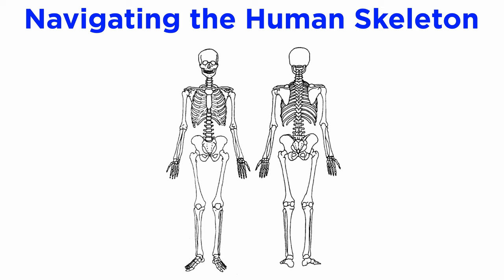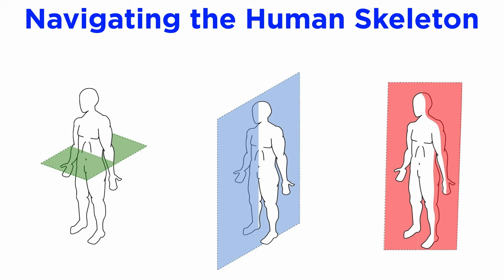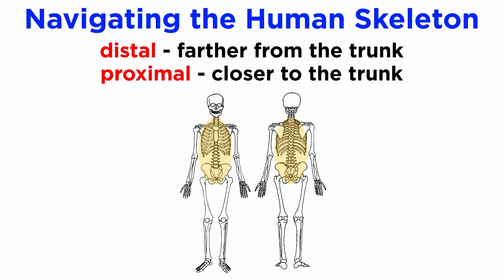The human skeleton is navigated assuming the following anatomical position: upright with the thumbs pointing outward and the palms forward. Anatomical planes and directions help orient bones in relation to one another. The transverse plane cuts the skeleton into top and bottom, the sagittal plane into left and right, and the coronal plane into front and back.